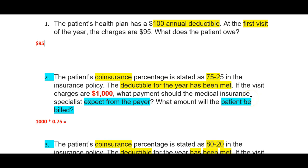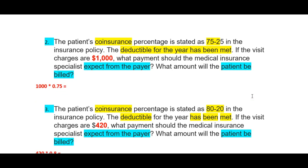For number 2, the patient's coinsurance percentage is stated as 75/25 in the insurance policy. The deductible for the year has been met. If the visit charges are $1,000, what payment should the medical insurance specialist expect from the payer? And then what will the amount be that the patient is billed? So this question is twofold.